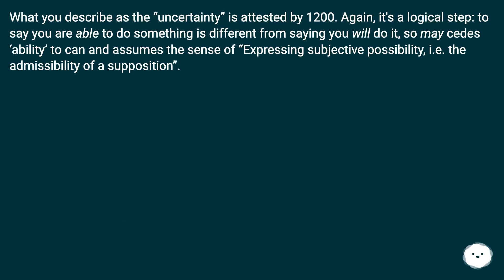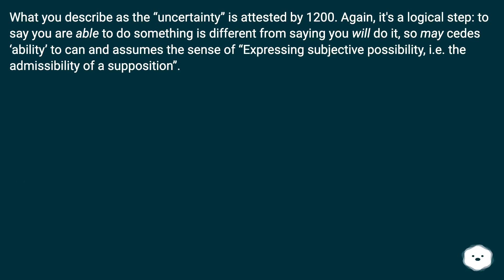What you describe as the 'uncertainty' sense is attested by 1200. Again, it's a logical step — to say you are able to do something is different from saying you will do it. So 'may' cedes ability to 'can' and assumes the sense of expressing subjective possibility, i.e., the admissibility of a supposition.